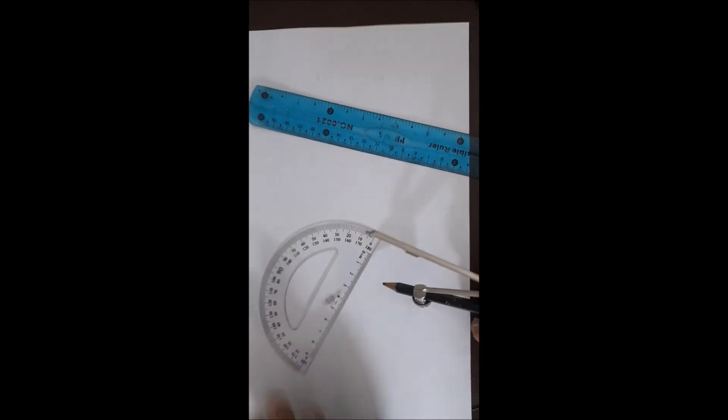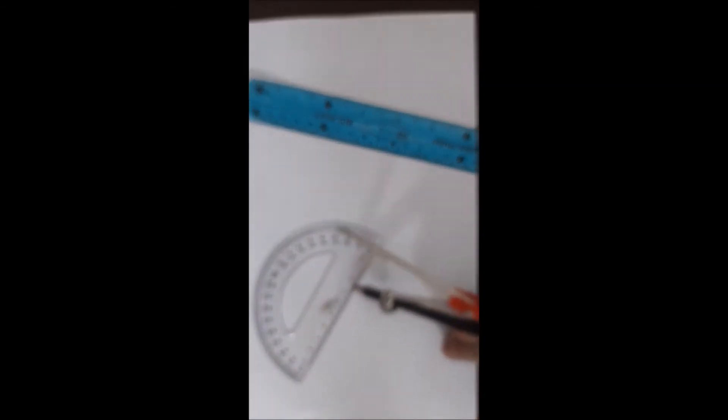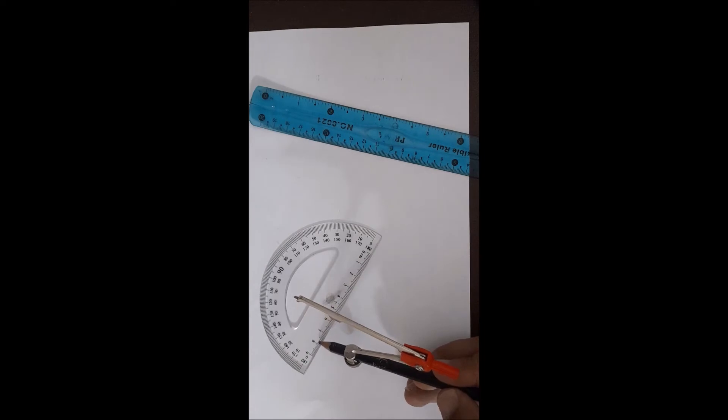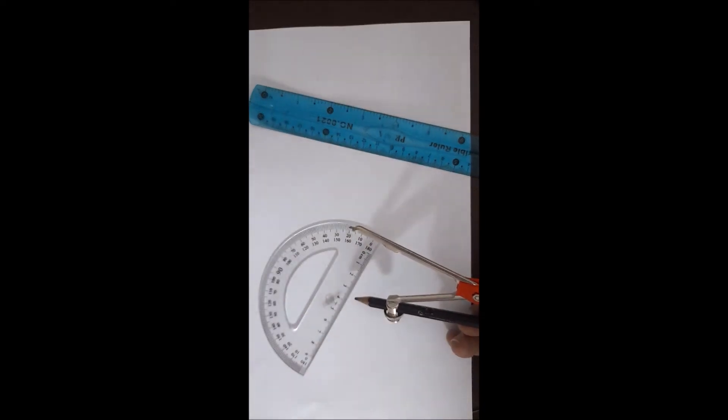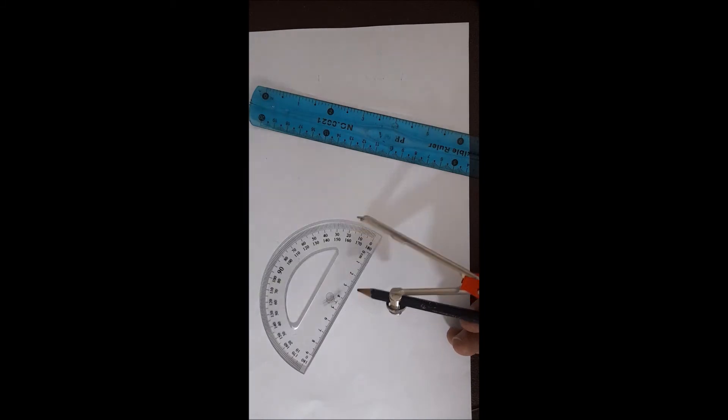Here you can use this bottom as a ruler, but it doesn't mean that every protractor will have this. The protractor which you have in your hand maybe doesn't carry this one.